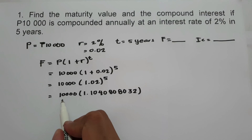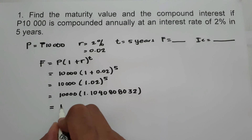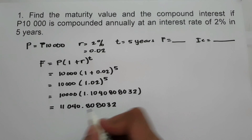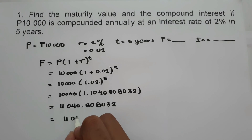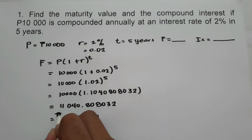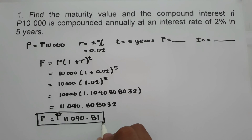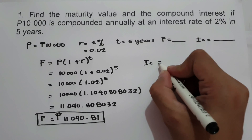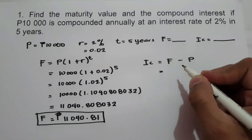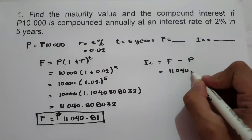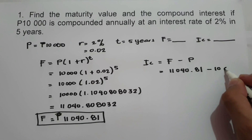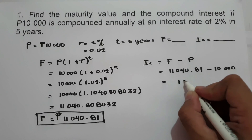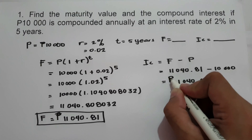And then we multiply this by 10,000. Therefore, the future value is 11,040.8032, or we can write our answer as 11,040.81. So this will be our future value. For the compound interest, we use the formula: compound interest equals future value minus principal. So 11,040.81 minus 10,000 equals 1,040.81. So this will be our interest.